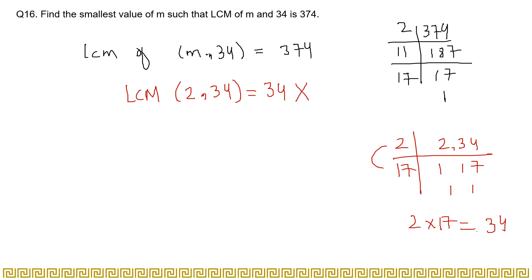We will check for 11 now. So, LCM of 11 and 34. Let's see. 11 and 34. Factoring: 2 into 17 is 34, and we have 11. 11 into 1 is 11, and 17 into 1 is 17. That means we have to multiply 2, 11, and 17 together.